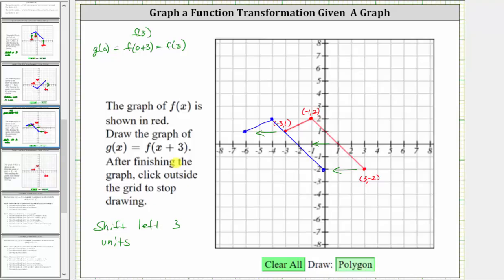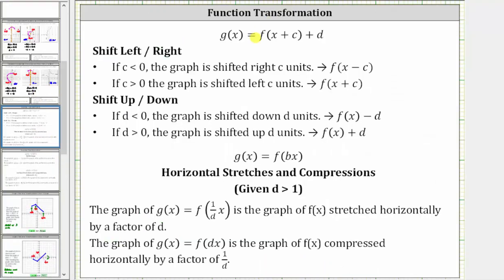Because this is probably the trickiest transformation, let's look at some notes. If we focus on g of x equals f of the quantity x plus c: if c is less than zero or negative, meaning the form would be f of the quantity x minus c, the graph is shifted right c units. So if we have subtraction, the graph is shifted right c units. And if c is greater than zero or positive, the form of the function is f of the quantity x plus c, the graph is shifted left c units. So if we have addition, the graph is shifted left c units.